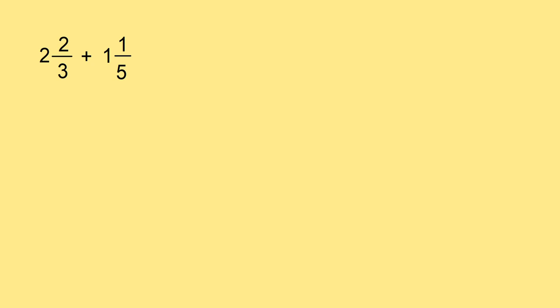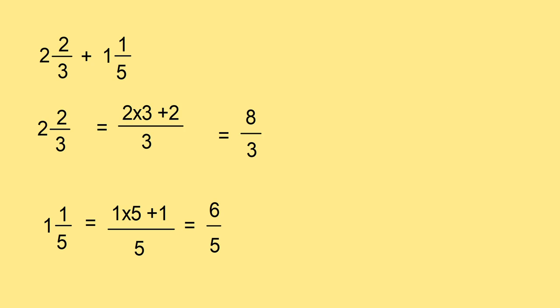How will you add 2, 2 by 3 plus 1, 1 by 5? First, change this mixed fraction into improper fraction. That is, 2, 2 by 3, you can write it as 2 into 3 plus 2 divided by 3. That is, you multiply the whole number with the denominator and plus the numerator. This is 8 by 3. And here, 1 into 5 plus 1. That is 6 divided by 5.